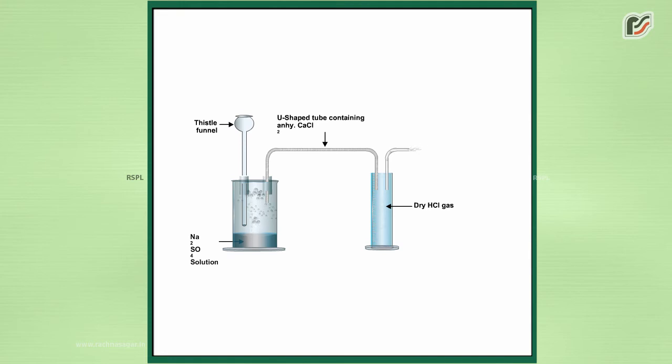Pass the HCl gas evolved through a U-shaped tube containing anhydrous CaCl2. Collect the dry HCl gas in a dry gas jar.